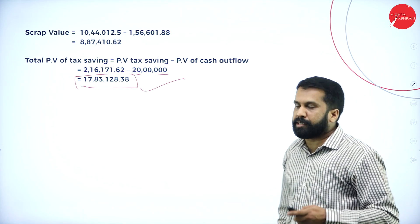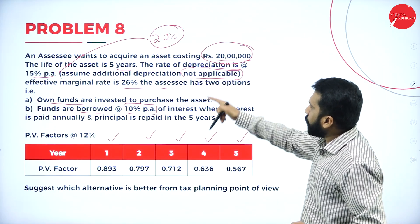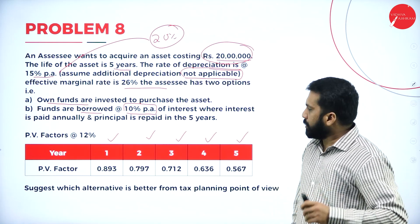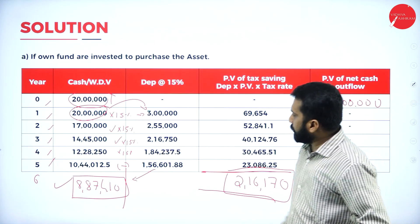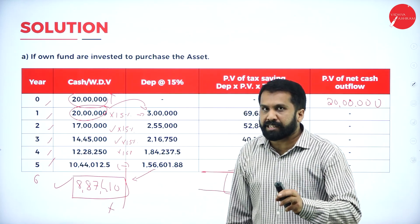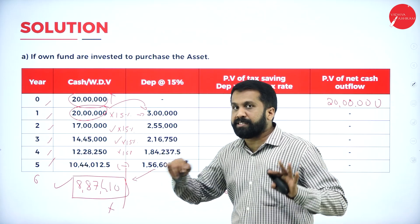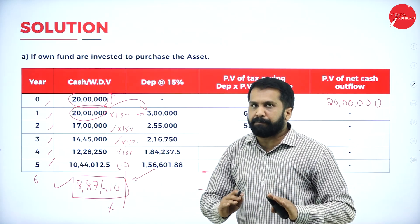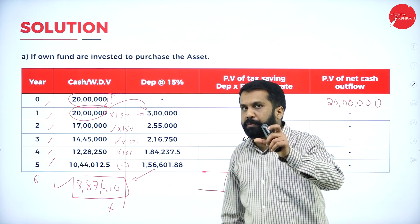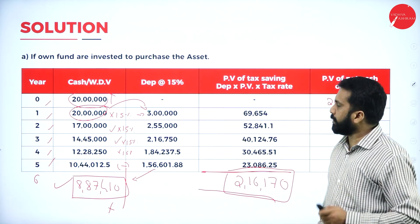Do we have scrap value in this problem? Just check. There is nothing called scrap value, so no calculation of scrap value — this is also not required. If you have scrap value, then only we need WDB for the 6th year. No scrap value, this is not required. Your investment minus tax saving — you are done with your own fund.